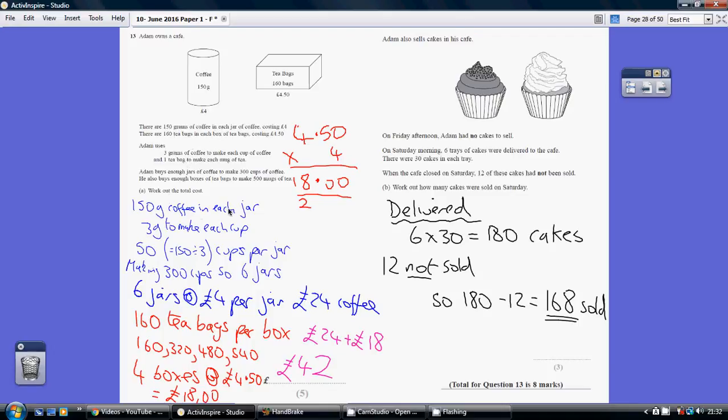There's 150 grams of coffee in each jar, and we can see it takes 3 grams of coffee to make a cup of coffee. So, how many cups of coffee can we get out of a jar? 150 divided by 3, 50 cups per jar.